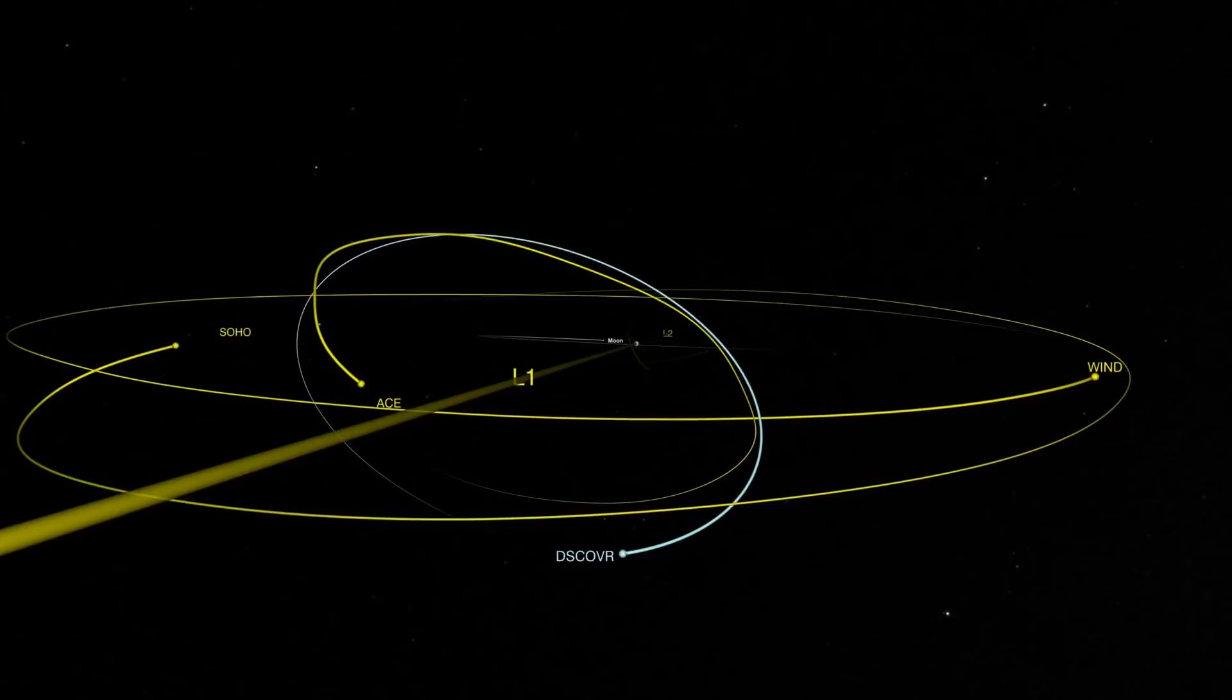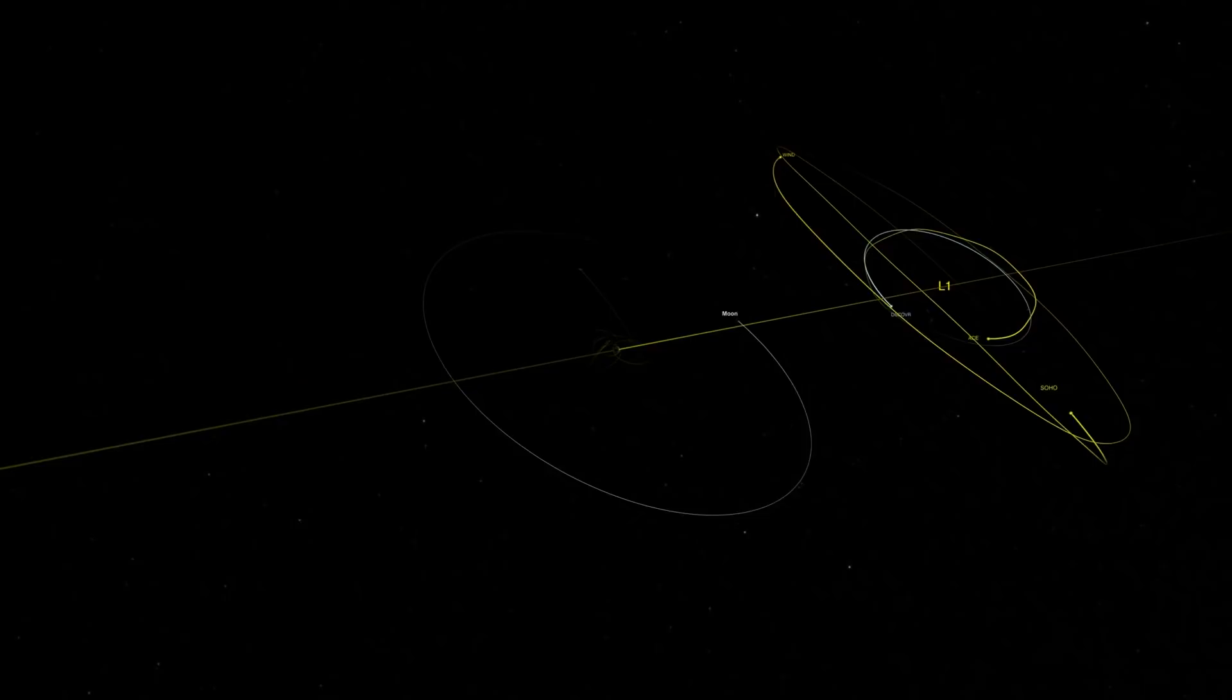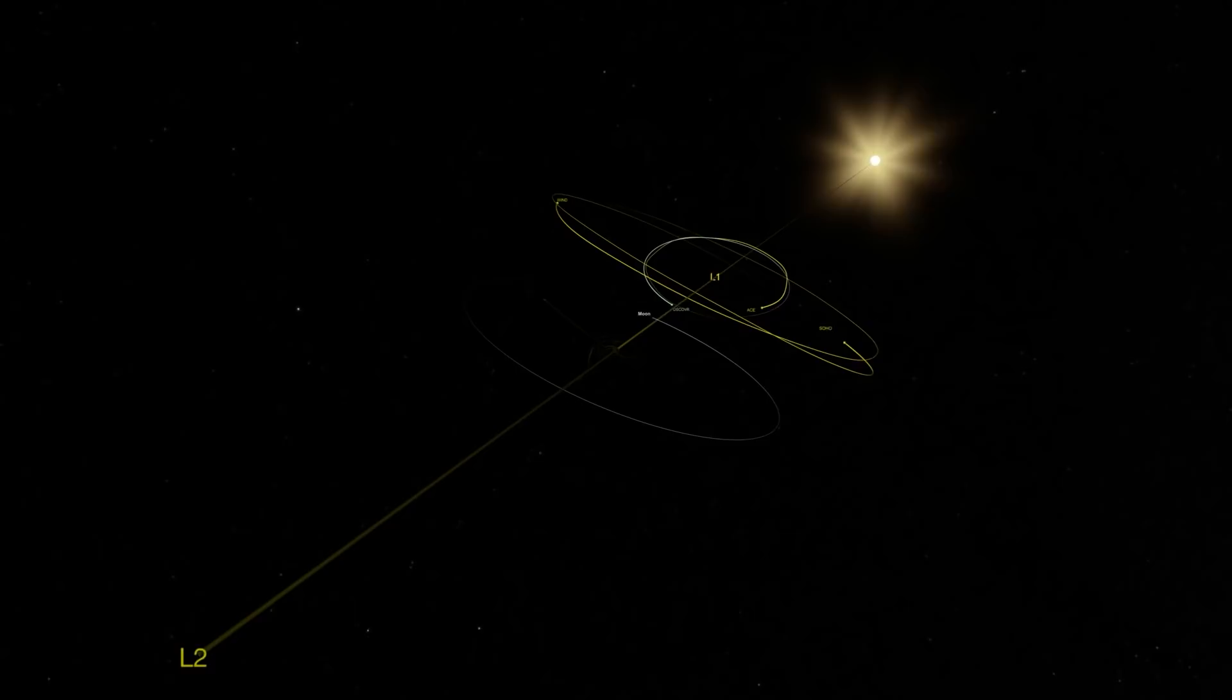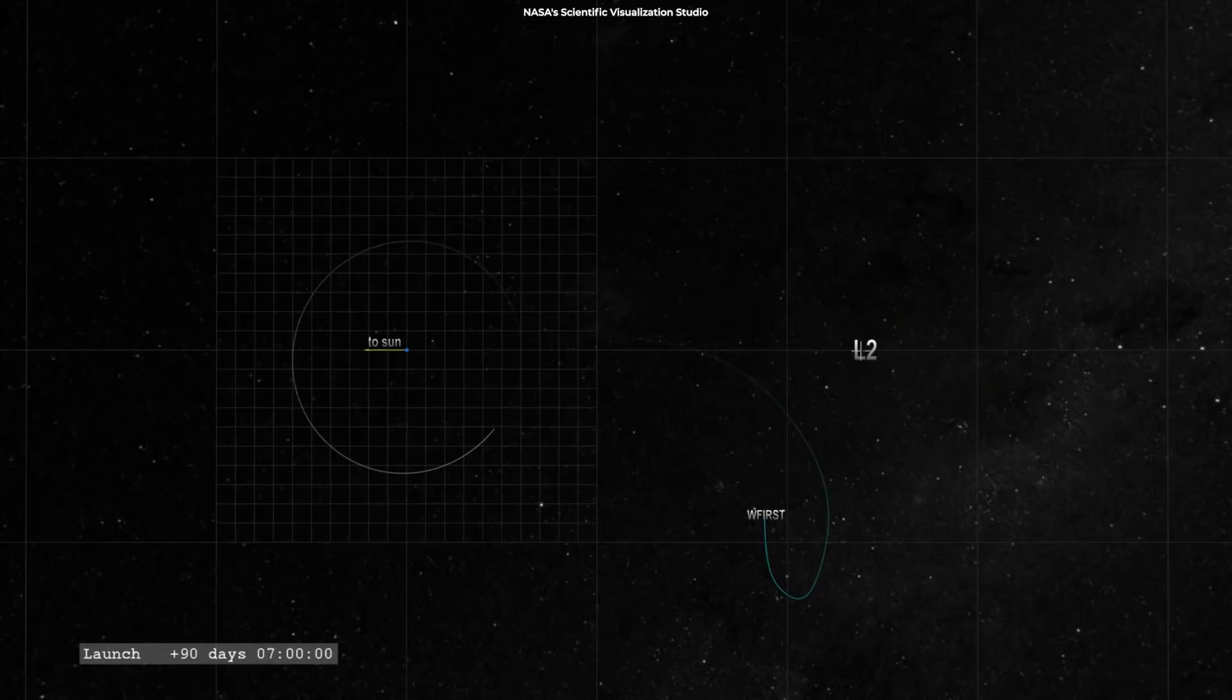As we all know, the Earth orbits the Sun once a year. At L2, exactly lined up with both the Sun and the Earth, the combined gravity of the two large bodies, tugging in the same direction, offers a spacecraft an extra boost of energy, locking it into perfect unison with the Earth's yearly orbit.